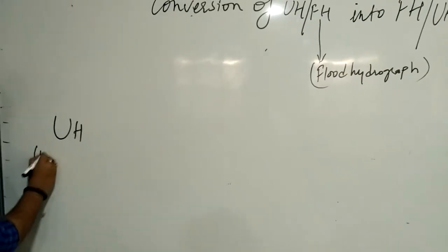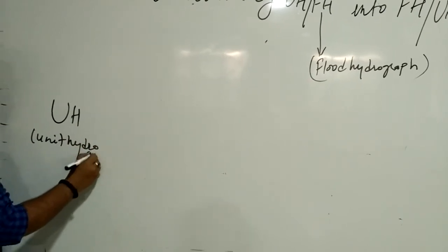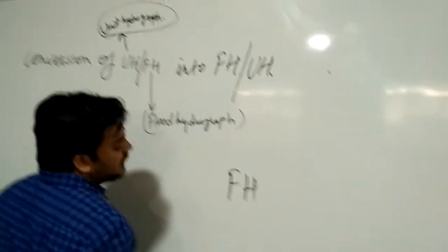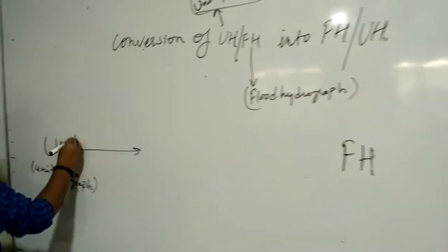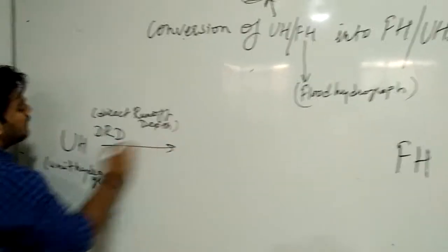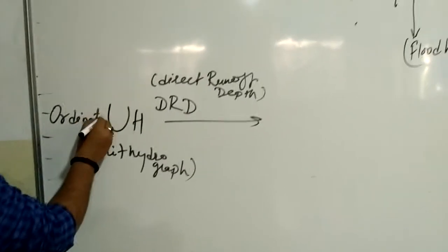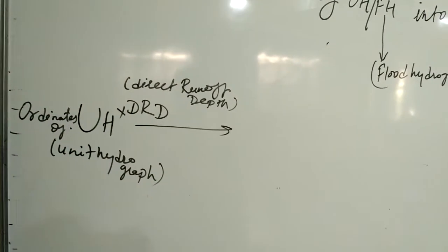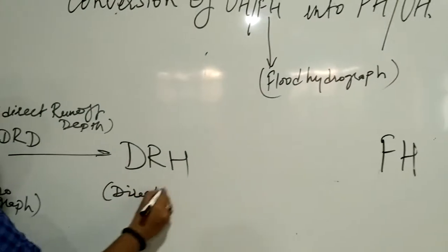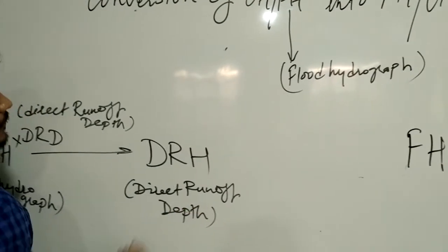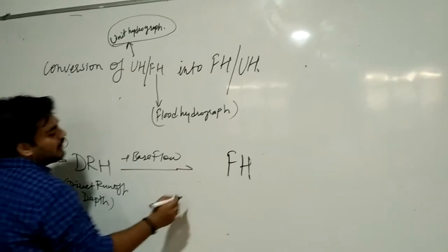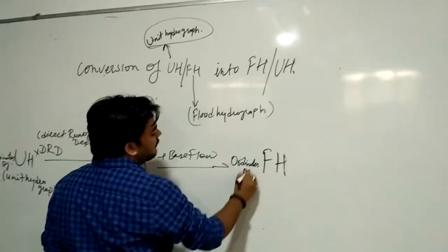This is the unit hydrograph. If the ordinates of any hour duration of unit hydrograph are given, then we have to obtain the flood hydrograph. From that given duration, we have to first calculate the direct runoff depth. Ordinates of the unit hydrograph multiplied with direct runoff depth will give the DRH — the Direct Runoff Hydrograph. From the DRH, by adding the base flow, we get the coordinates of the flood hydrograph.